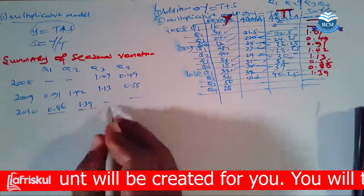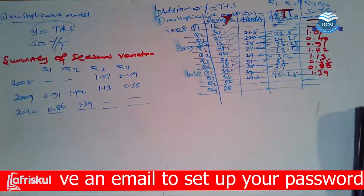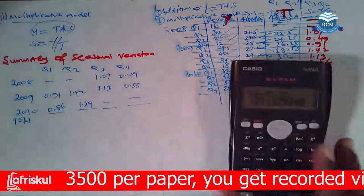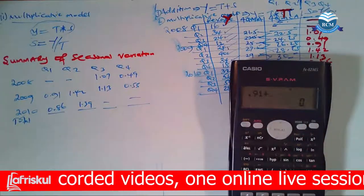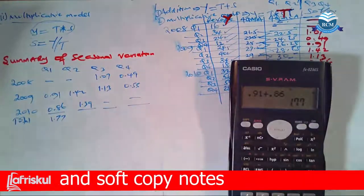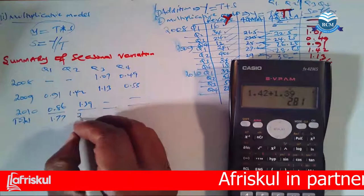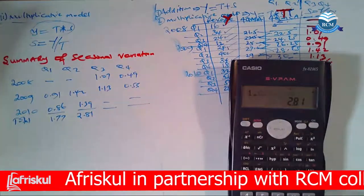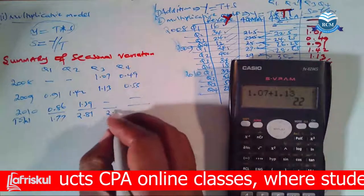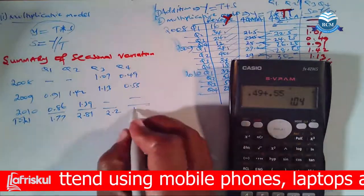So once you have your summaries, what you need to do is to come under and give us the total here. So total, what do we have? We have 0.91 plus 0.86, which gives us 1.77. We have 1.42 plus 1.39, which gives us 2.81. 1.07 plus 1.13, which gives us 2.2. We have 0.49 plus 0.55, which gives us 1.04.